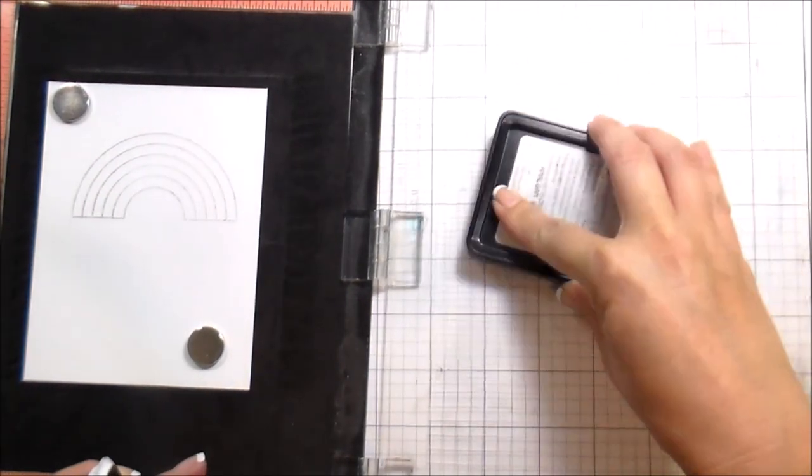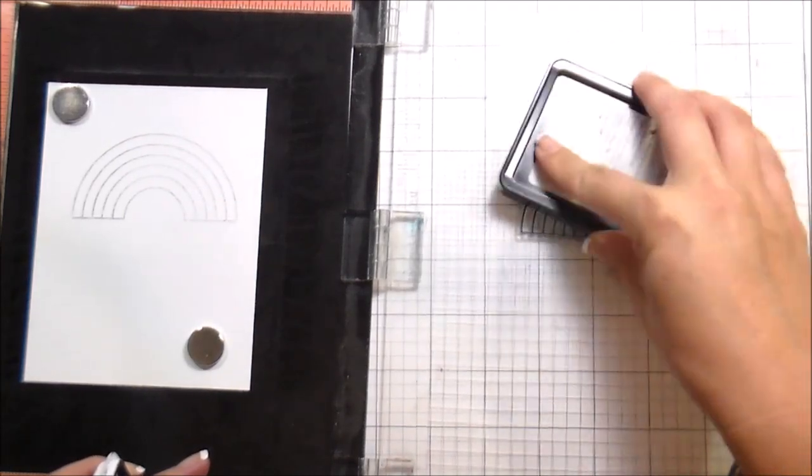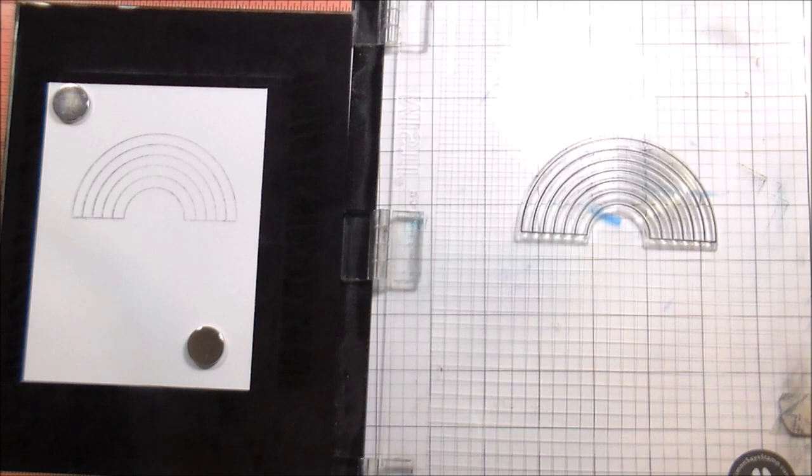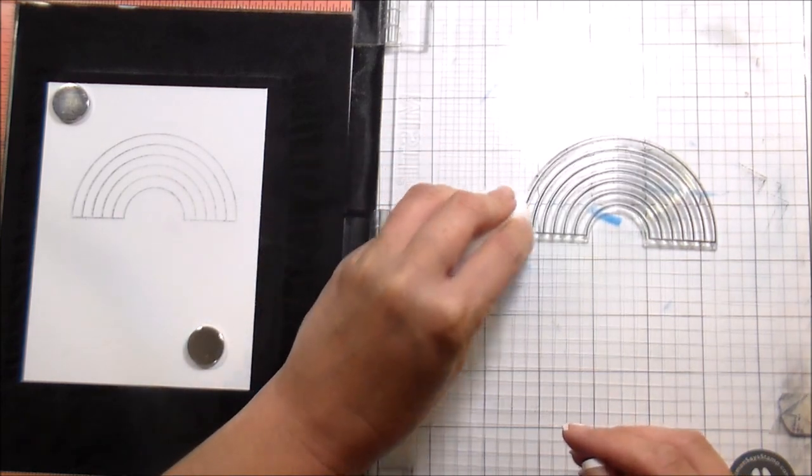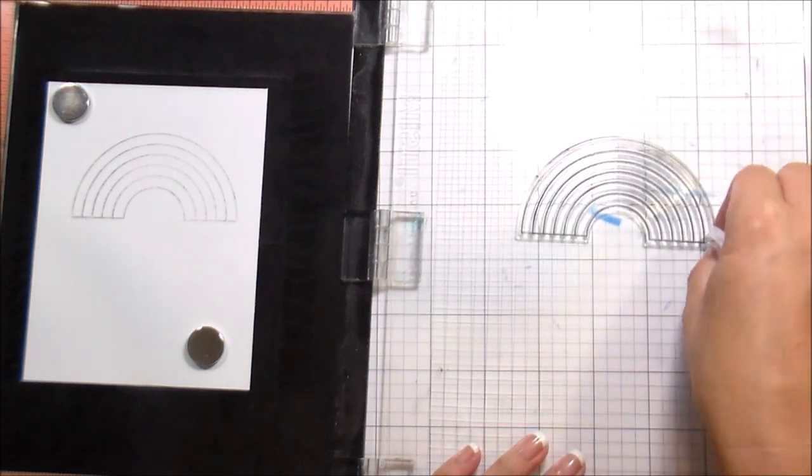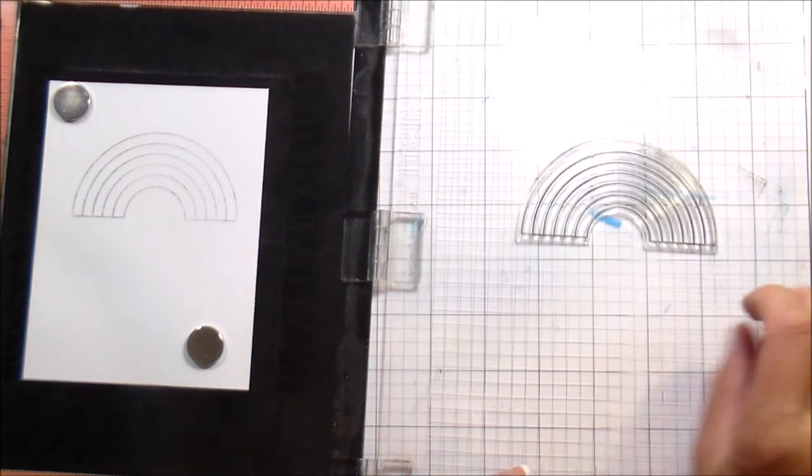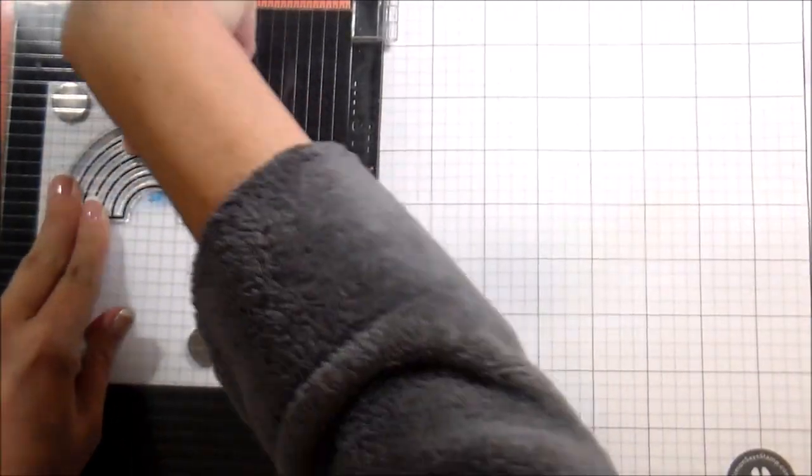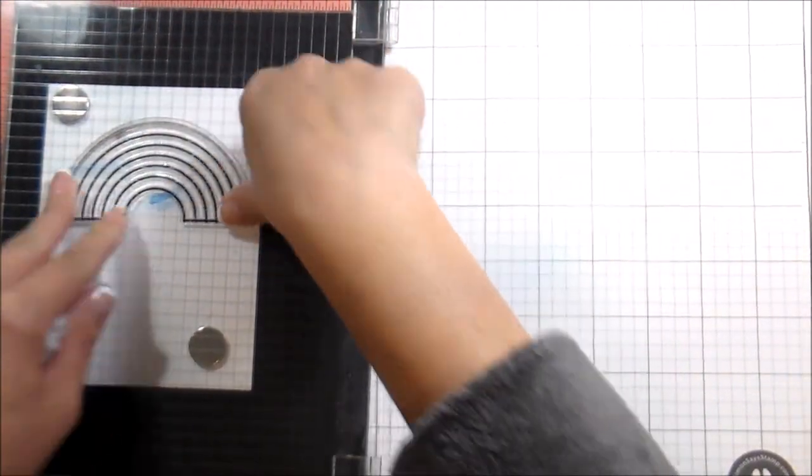Now because there is a little bit of lag time in between the inking of the stamp and between the actual stamping because I have to get rid of that line, the stamping is a little bit more faint. So I just stamped it multiple times until I was happy with the way that it looked. I'm going to do the same thing with my sentiment.